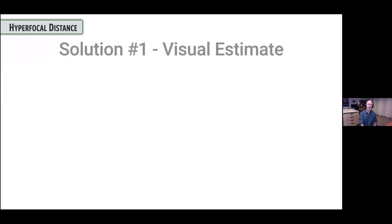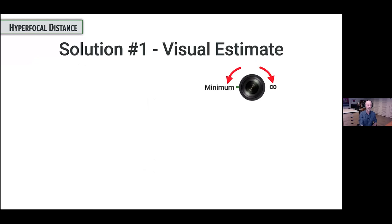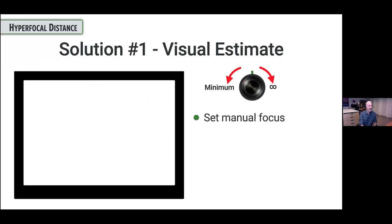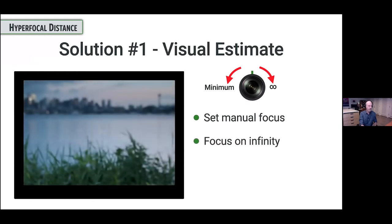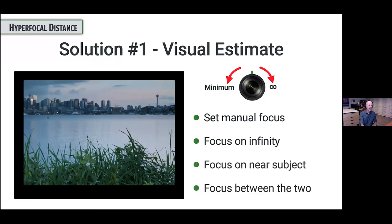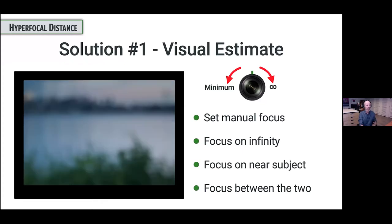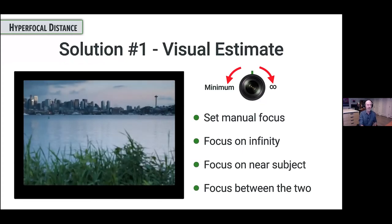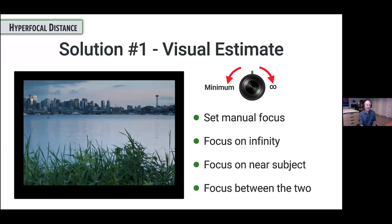You do not need to use all five, but pay close attention to the last one because I think it's the easiest. First up, you can just visually estimate it. I do this from time to time when I feel pretty confident about my estimation abilities. What you do is focus on infinity, focus up close, and then just put the focus somewhere in between. Set your lens to manual focus, focus on infinity to see where that puts you on the focusing ring, then focus up close, and put it somewhere between the two. With a small enough aperture, you're probably going to be fine.